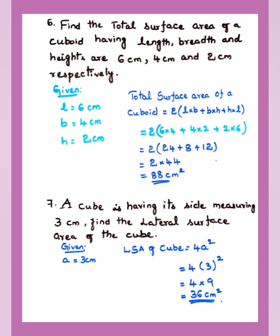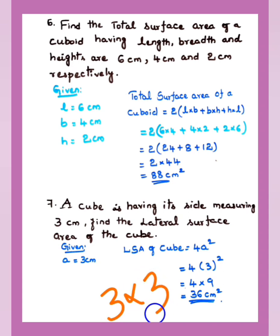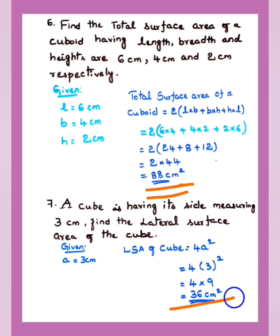A cube has its side measuring 3 cm. Find the lateral surface area of the cube. LSA of a cube = 4a². Given a = 3 cm: LSA = 4 × 3² = 4 × 9 = 36 cm². For descriptive-type answers, always check and write the unit properly.